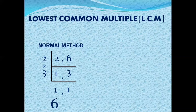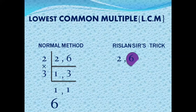So the LCM is 6 — that is the normal method. Now Russlanser's trick: for 2 and 6, take the largest number, which is 6. Check if 6 can be divided by the lowest number, 2. Yes it can divide, so the LCM is 6.